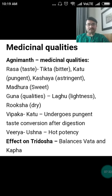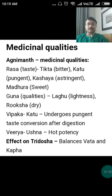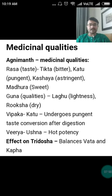Medicinal qualities as per Ayurveda: the Rasa or taste is Tikta, Katu, Kasaya, and Madhur — that means bitter, pungent, astringent, and sweet. The Guna or qualities are Laghu and Ruksha — meaning light and dry. Vipaka is Katu — it undergoes pungent transformation after digestion. Virya is Ushna — it has hot potency. The effect on Tridosha is that it balances Vata and Kapha.